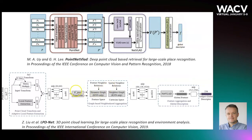To overcome this weakness, later methods enhance vanilla PointNet architecture by adding different mechanisms to capture local contextual information. The state-of-the-art LPDNet method uses a rather complex design and combines learning-based and handcrafted local features. 3D points enhanced with 10 pre-computed handcrafted features are processed by a PointNet module, then fed to a graph neural network to aggregate neighborhood features, then processed using a PointNet module again, and then fed to a NetVLAD layer to compute a global descriptor.